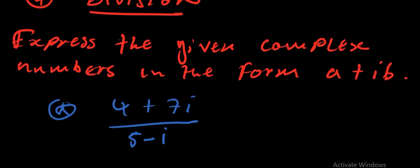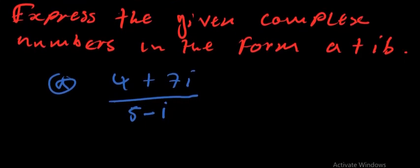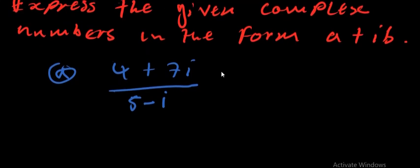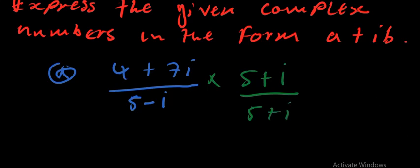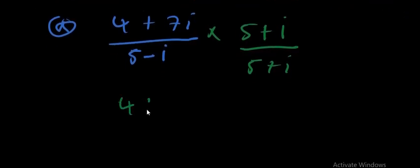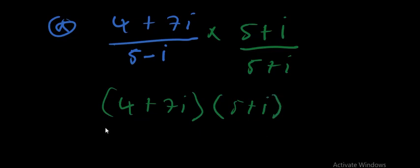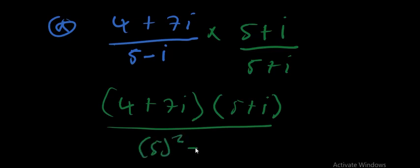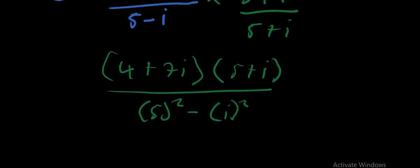In order to get rid of the i in the denominator, we find the conjugate of the denominator by changing the sign, which gives 5 + i. We multiply both numerator and denominator by this conjugate (5 + i). The denominator then becomes a difference of two squares: 5² − i².